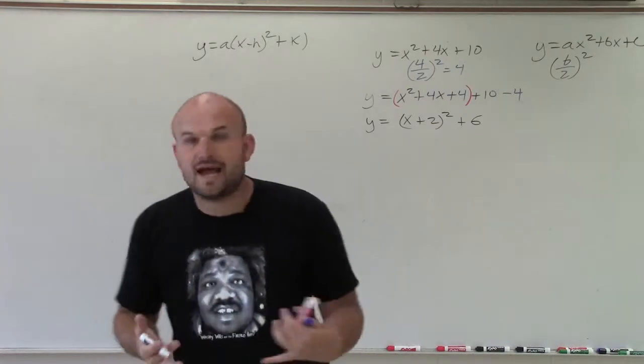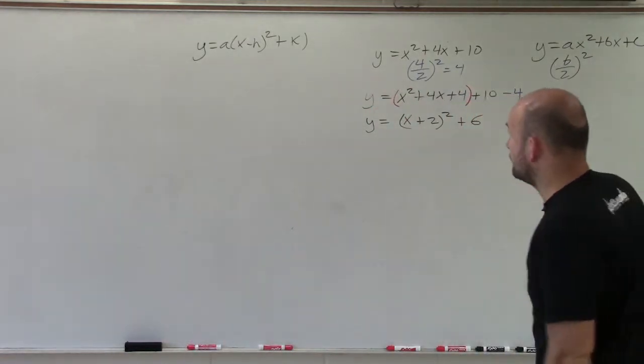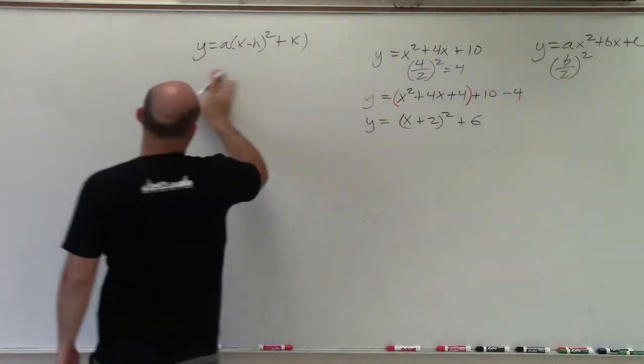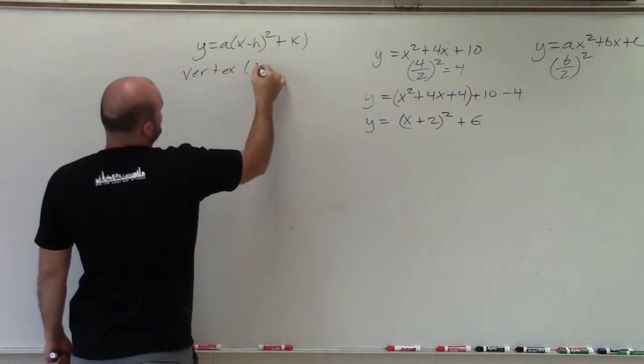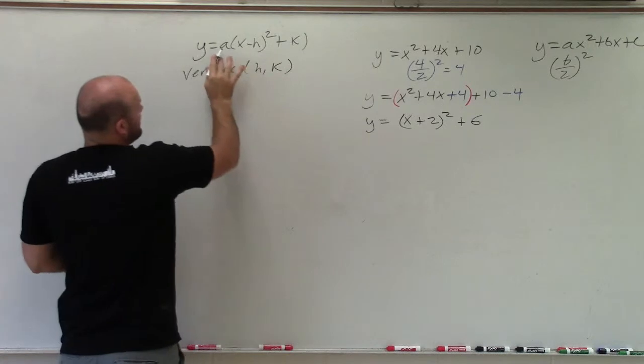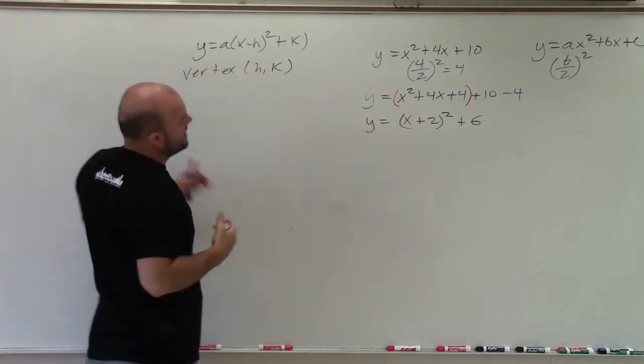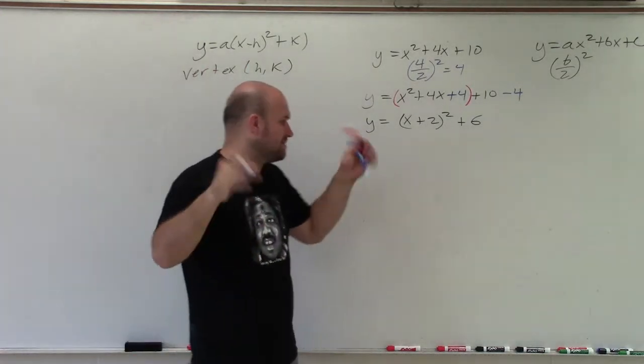Okay, cool. So now that I have this in my vertex form, I need to remember what all my transformations are. So here, you really just need to know your vertex. And then remember a, if it affects it, but we don't have an a, so we're not going to worry about it.